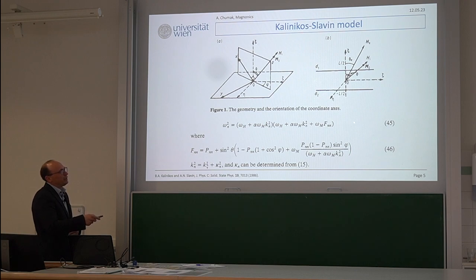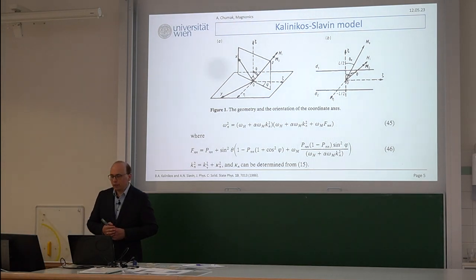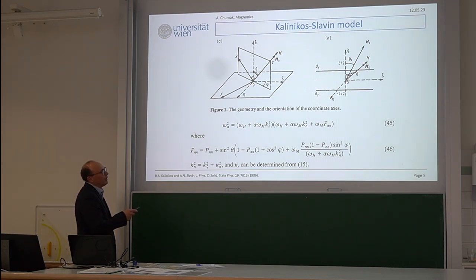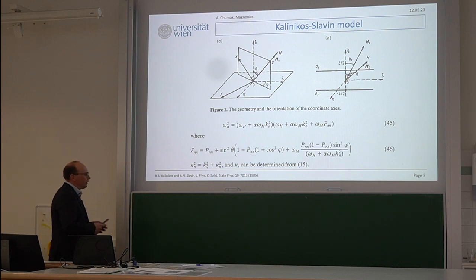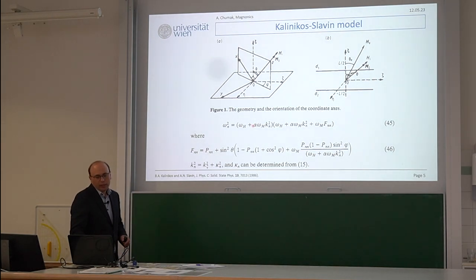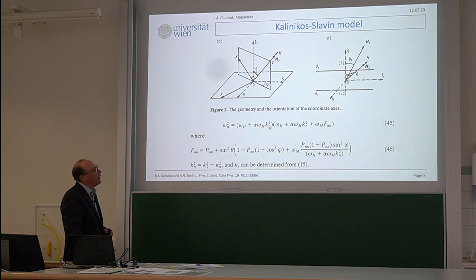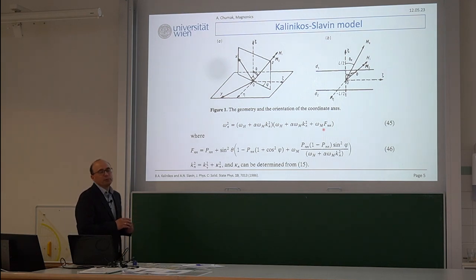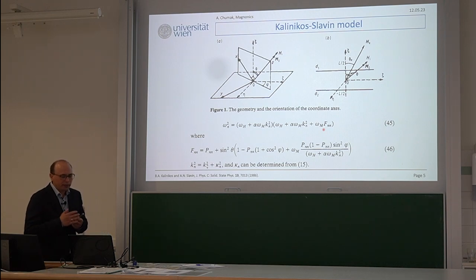The important practical result is this analytical expression: you have frequency of the spin wave and wave number k. There is omega_H, which depends on applied magnetic field, and a component proportional to k-squared with term alpha, which represents exchange interaction. There is also a larger term describing dipole-dipolar interaction — all the geometry-related magnetostatics sits in there. So from this formula you can see it takes into account both exchange and dipole-dipolar interaction, properly describing the dispersion.